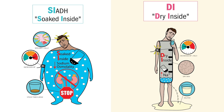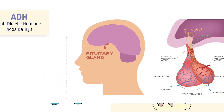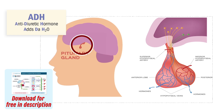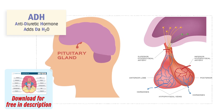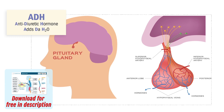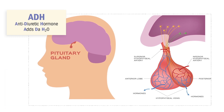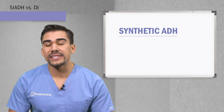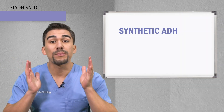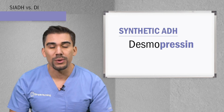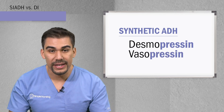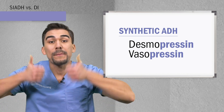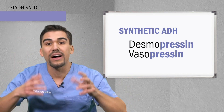A lot of NCLEX questions come from this, so it's important to know it all revolves around ADH, the antidiuretic hormone. Created in the posterior pituitary at the base of the brain, our memory trick is ADH adds to H2O — this guy keeps fluid in the body and not in the potty. The synthetic form of ADH, like desmopressin or vasopressin, ends in 'pressin' and is given to decrease urine output and also helps to press up blood pressure.